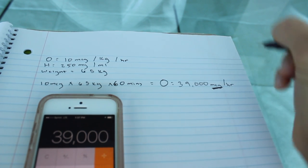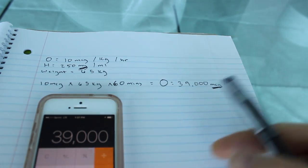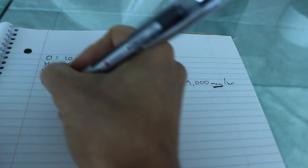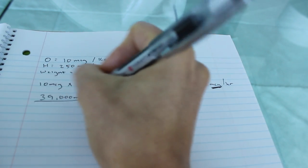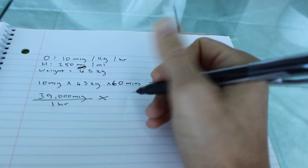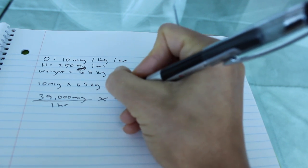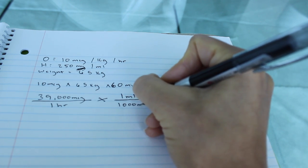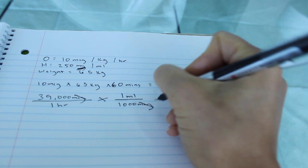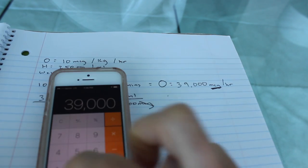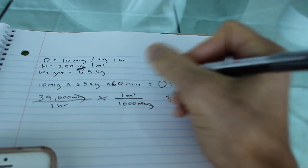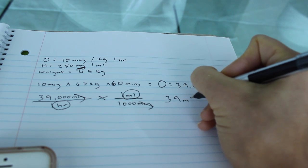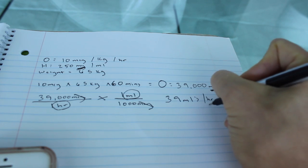We cannot use micrograms because our ordered on-hand quantity is in milligrams. So we have to do the conversion. So we take 39,000 micrograms over one hour. We need to get rid of the micrograms because we need mLs per hour. So we're going to take one mL has 1,000 micrograms. We're able to cross these off. We can calculate it or you can do it in your head. Divided by 1,000 is 39. So 39, and then what are we left with? mLs per hour. So 39 mLs per hour. And that is our order.